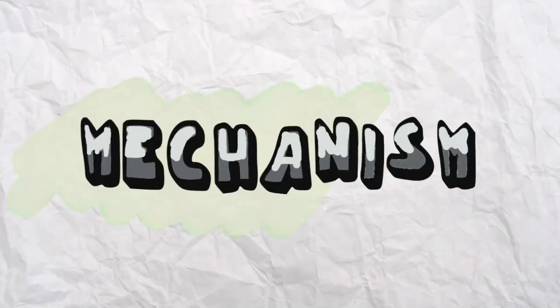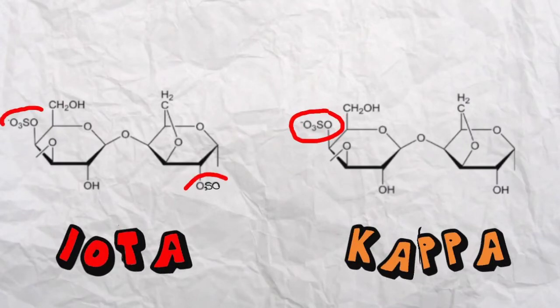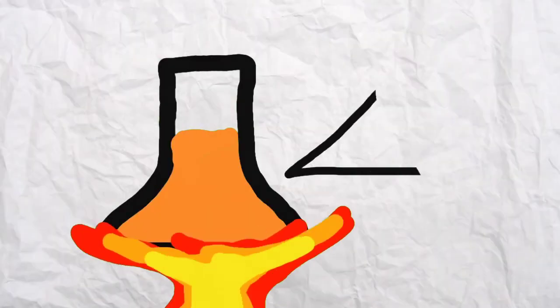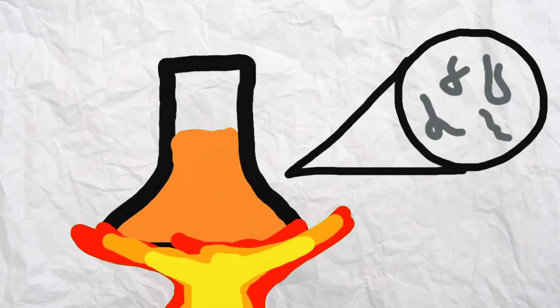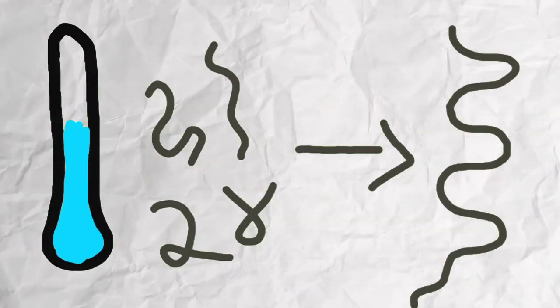Let's talk about the mechanism first. If you take a look at the structure of kappa carrageenan, it has one sulfate group, while iota carrageenan has two. Pay attention to that, because those structural properties will come into play later. All types of carrageenan are in a random coil formation when heated, and by cooling, the random coil forms a double helix.